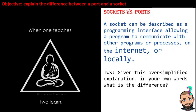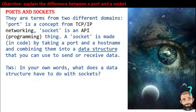A socket can be described as a programming interface allowing a program to communicate with other programs or processes on the internet or locally — but we're going to focus on the networking part. What does it mean that a socket is a programming interface? I need an IP address and then a port number, and that is the interface a program uses to create network communication. They are terms from two different domains: port is more in the networking, particularly TCP/IP domain, while socket and socket programming is an API thing.